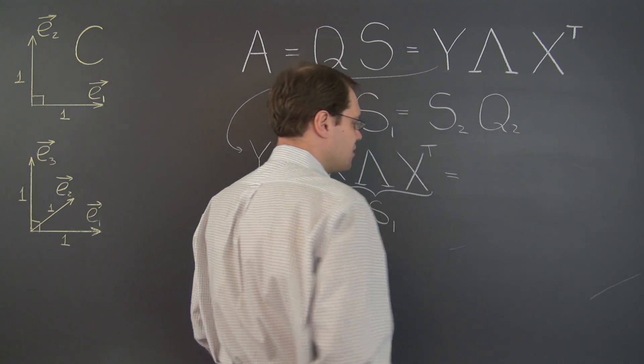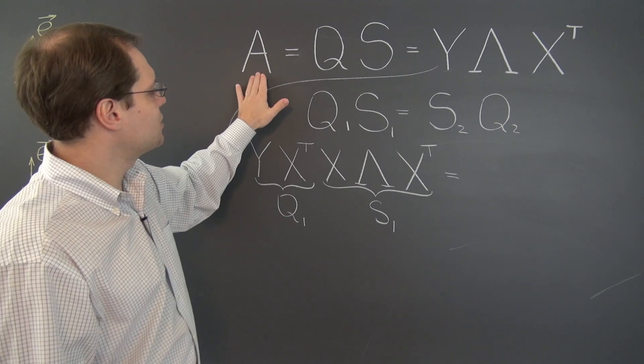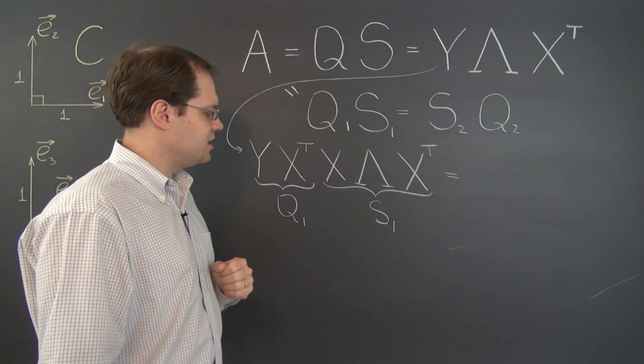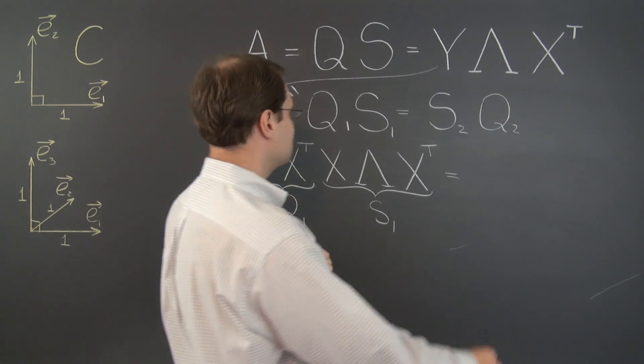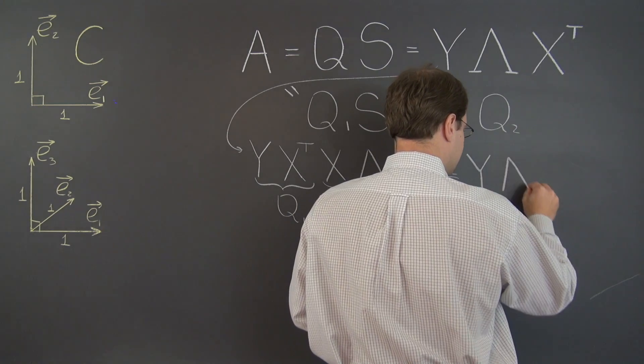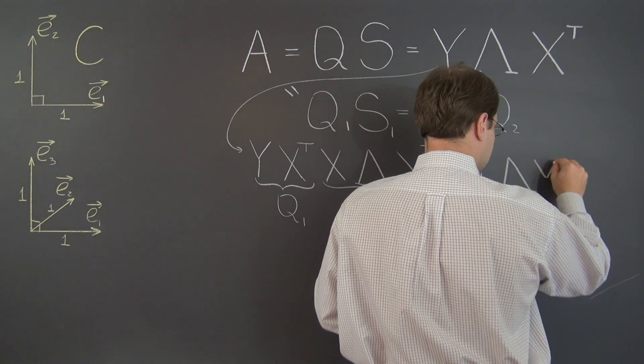And I'm writing the equal sign because in all cases, we're dealing with the matrix A. In fact, these two also equal the matrix A. So here's what we're going to have. We're going to have Y lambda Y transpose.